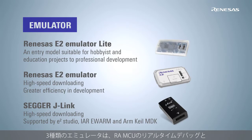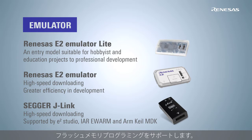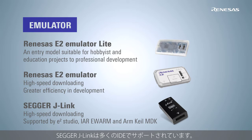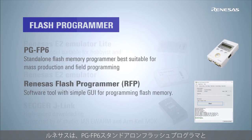There are three emulator models that support real-time debugging on RA MCUs, and each can also be used as a Flash programmer. The E2 Emulator Lite is an entry model suitable for new starters, the E2 Emulator has high functionality for more efficient development, and the Segger J-Link is widely supported by many IDEs.